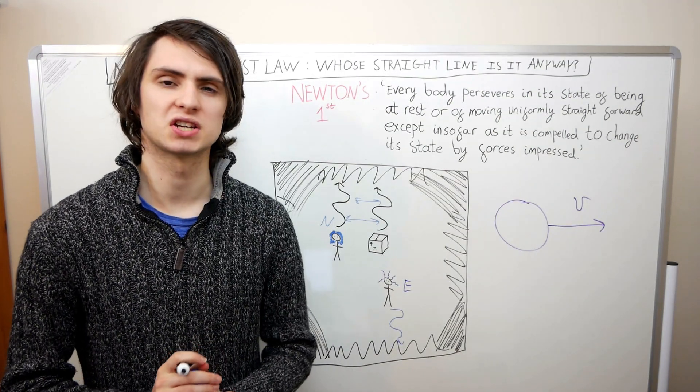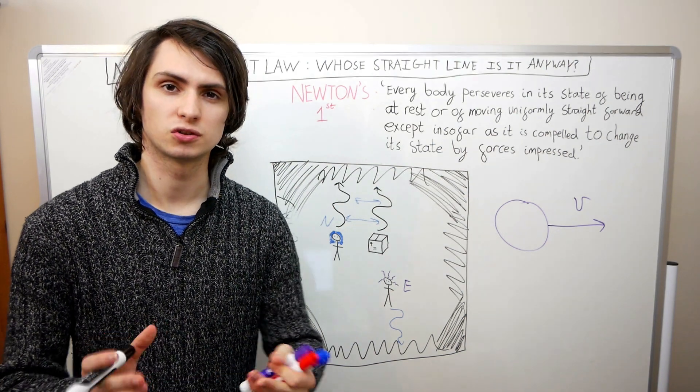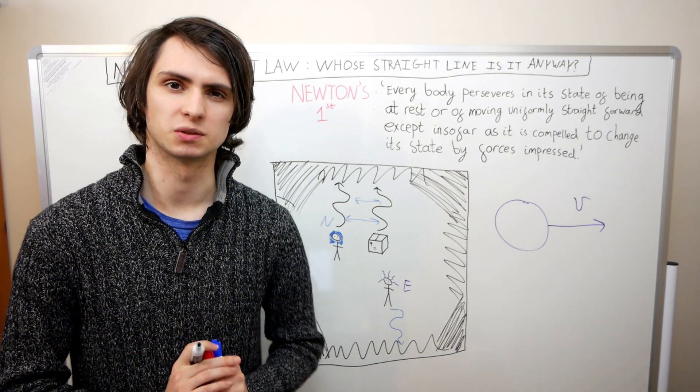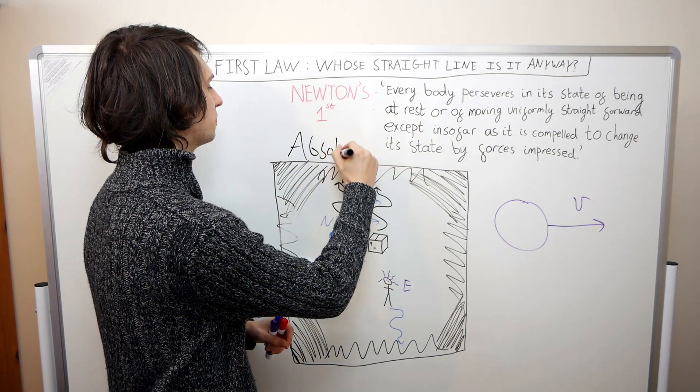So what is it that we need to measure everything relative to? Newton realised that these problems existed in his theory, and so suggested the only solution that seemed sensible. He postulated the existence of absolute space.